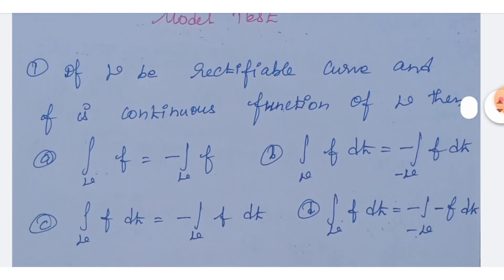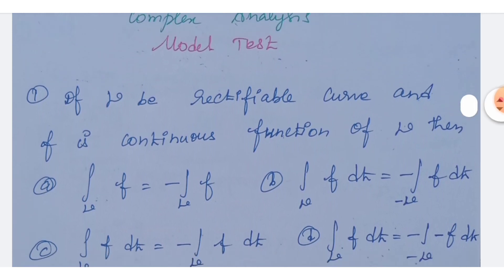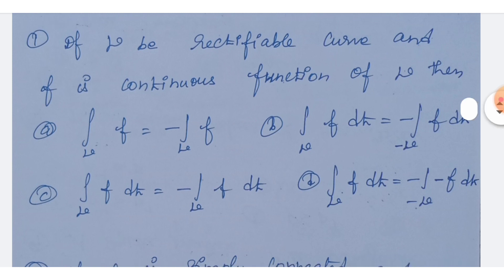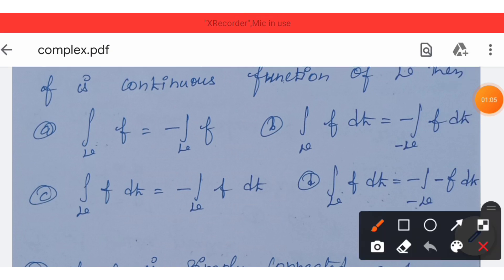First question: if gamma is a rectifiable curve and f is a continuous function on gamma, then which option is correct? Option A: integral over gamma of f equals minus integral over gamma of f. Option B: integral over gamma of f dt equals minus integral over minus gamma of f dt. Option C: integral over gamma of f dt equals minus integral over gamma of f dt. Option D: integral over gamma of f dt minus integral over minus gamma of minus f dt. Option B is the correct answer.